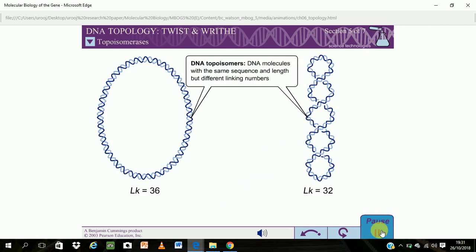DNA molecules with the same sequence and length but different linking numbers are called DNA topoisomers since they differ only in topology.